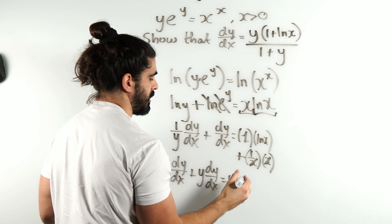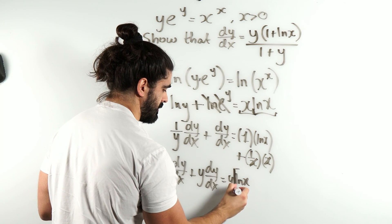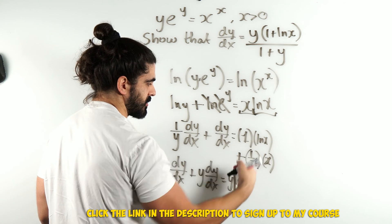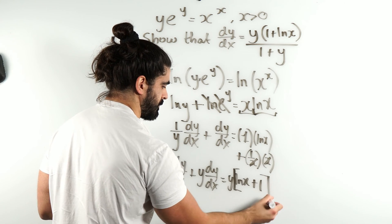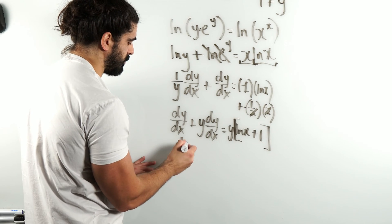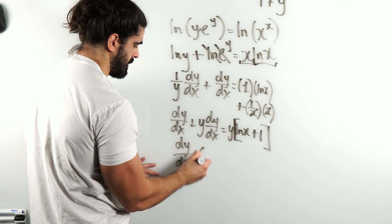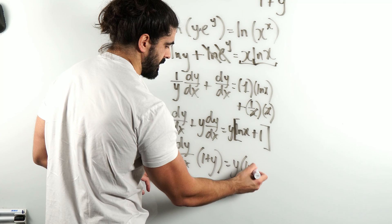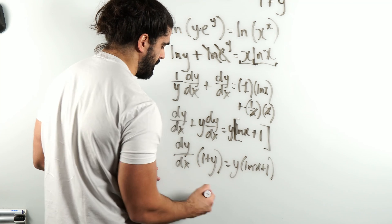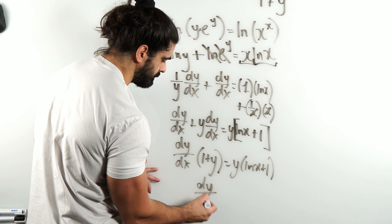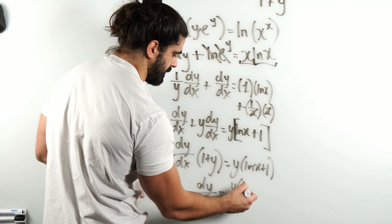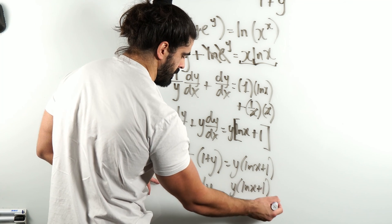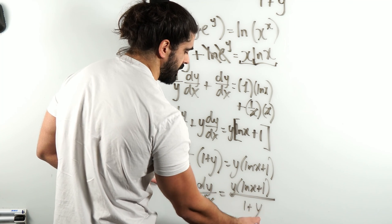Although, look at the answer. They have 1 plus y. Maybe I'll put a bracket here. It's y times this whole side, so we have plus y. Here, we factorize out dy/dx. We're left with (1 + y) dy/dx equals y(ln(x) + 1). Divide by the bracket, we get y(ln(x) + 1) all over (1 + y).